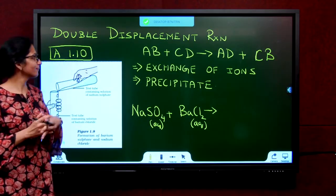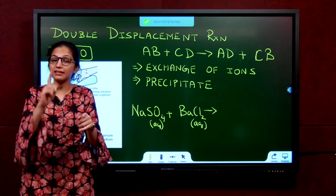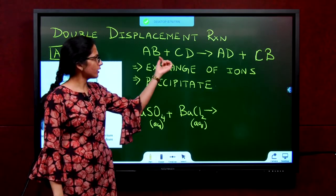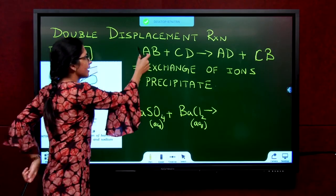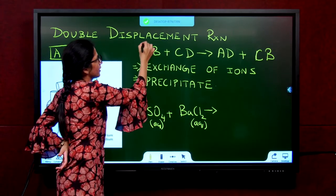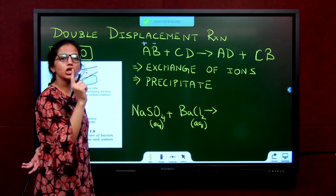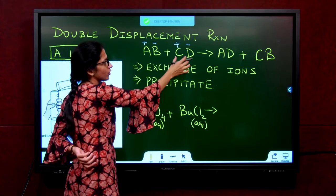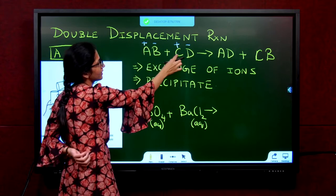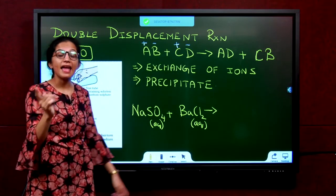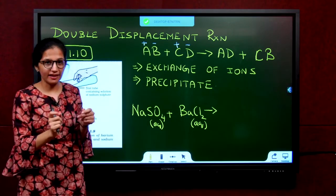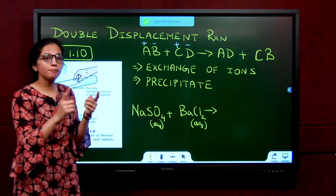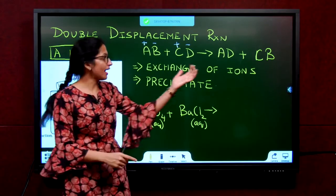Let us now see the last type of reaction: double displacement reaction. Displacement is happening, but double — two things are getting displaced. AB is a compound, CD is a compound, and they both react. A is positive, D is negative. In a compound, we write the positive element first. This positive will go and sit with D to give AD, and C will join B to give CB. So there is an exchange of ions taking place. Double displacement reaction is a reaction in which reactant compounds undergo exchange of ions to form products.